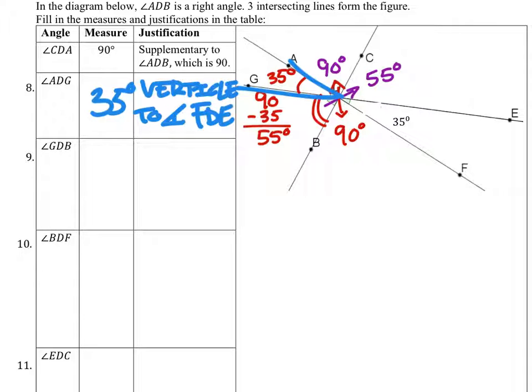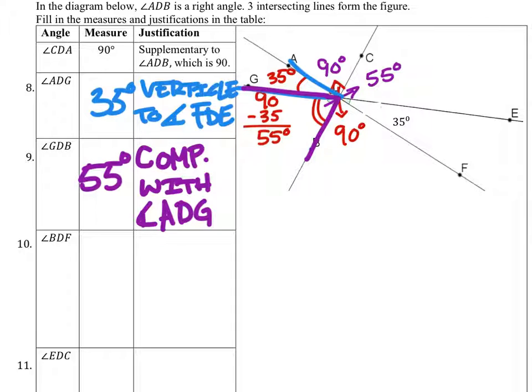Number nine, this one is looking at angle GDB, which is this angle right here. Now, we counted that as 55 degrees or found it to be 55 degrees. So it is 55 degrees because it is complementary with angle ADG.